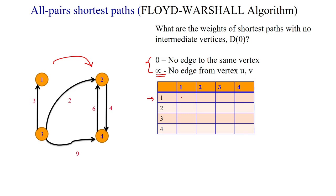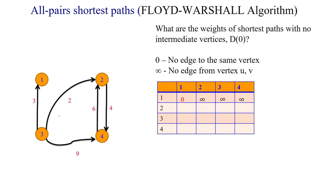Filling the matrix: 1 to 1 is self-loop, so 0. 1 to 2 — no edge, so infinity. 1 to 3 — no direct edge, infinity. 1 to 4 — no direct edge, infinity. From source vertex 2: 2 to 1 — no direct edge, infinity. 2 to 2 — self-loop, 0. 2 to 3 — no direct edge, infinity. 2 to 4 — there is an edge with cost 4, so we fill 4. From source vertex 3: 3 to 1 is 3, 3 to 2 is 2, 3 to 3 is 0 (self-loop), 3 to 4 is 9.